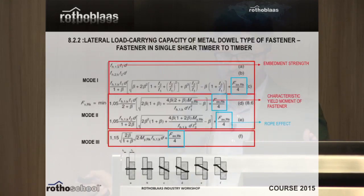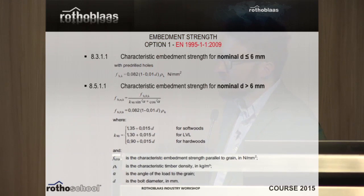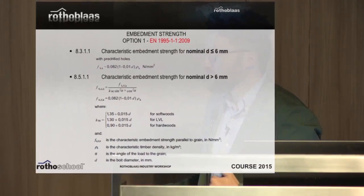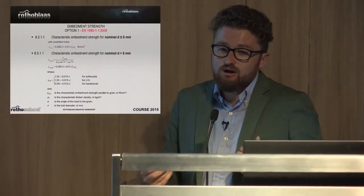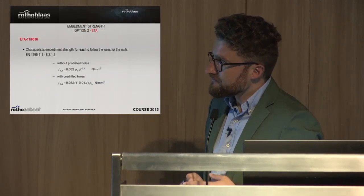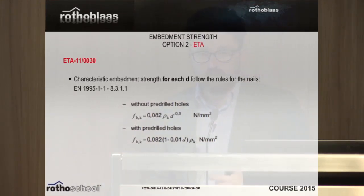Let's have a look at the first failure mode: the embedment strength. It is not difficult to calculate — Eurocode gives the rule and it depends on the density and type of timber; it describes how the grain can compress when in contact with the screw. The approach between Eurocode 5 and ETA is quite similar for this mode.